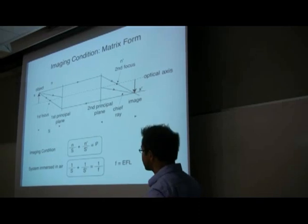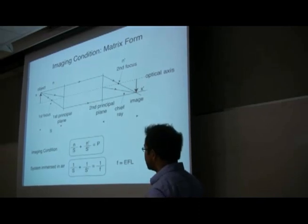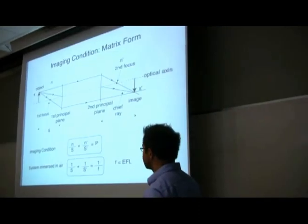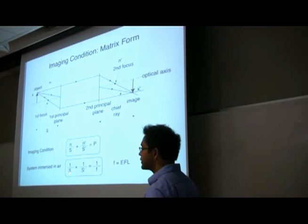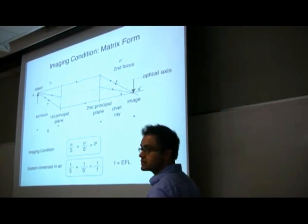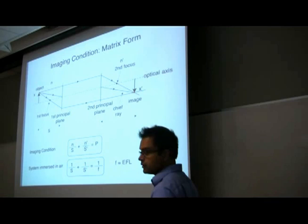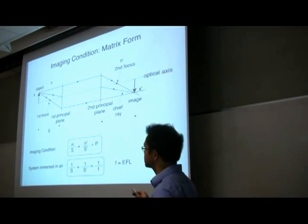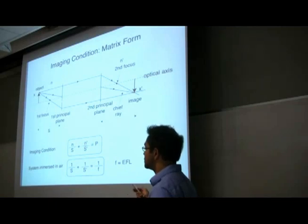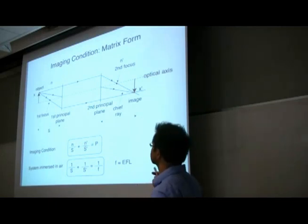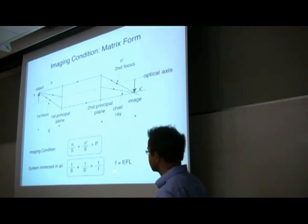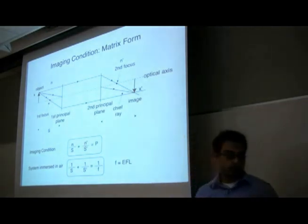We developed a matrix form and came up with the imaging condition. It was just 1 over the object distance plus 1 over the image distance equals 1 over the focal length. The distances are measured from the object to the principal planes — the object distance is from the object to the first principal plane, the image distance is from the second principal plane to the image, and the focal length is the effective focal length.